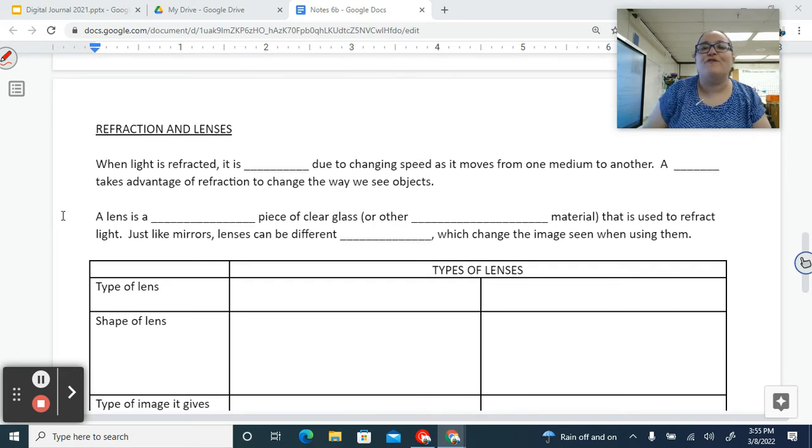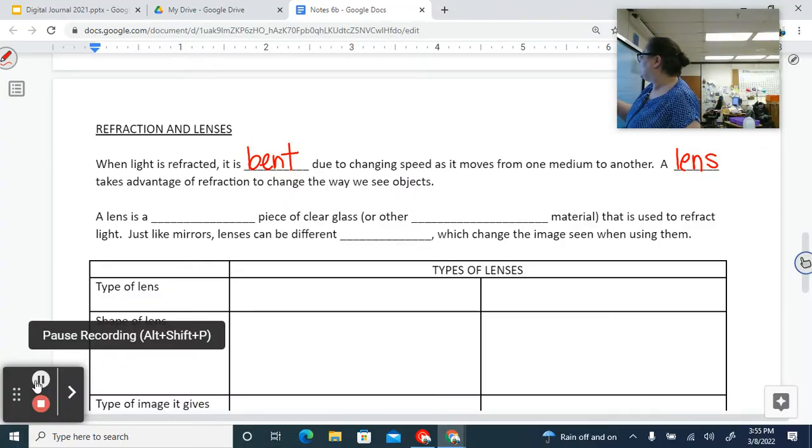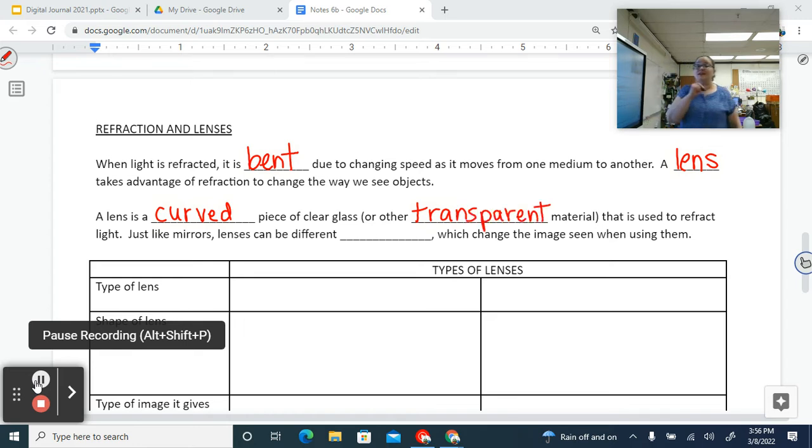Alright. So when light is refracted, so we've talked about reflection. Now we're talking about refraction. So when light is refracted, it is bent due to changing speed as it moves from one medium to another. A lens takes advantage of refraction to change the way that we see objects. A lens is a curved piece of clear glass or other transparent material. So it could be water. We made a lens out of water yesterday. Use an arrow. Remember? It can be acrylic. It can be plastic. It can be glass.